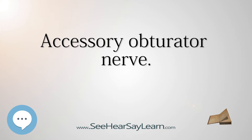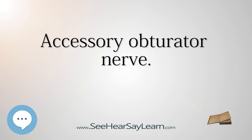Occasionally the accessory obturator nerve is very small and is lost in the capsule of the hip joint. When it is absent, the hip joint receives two branches from the obturator nerve.